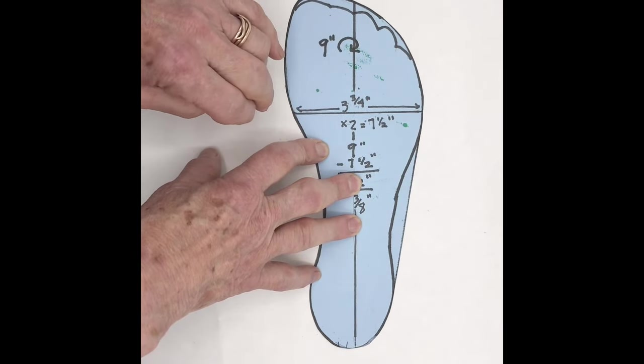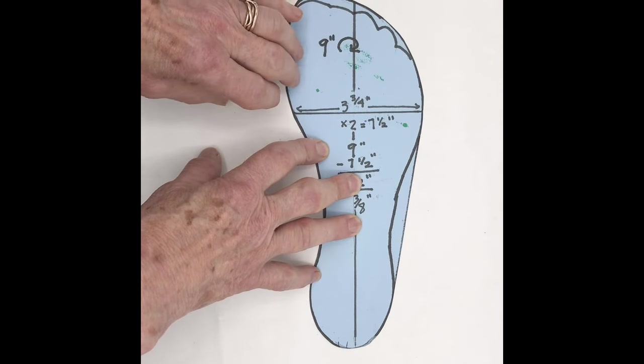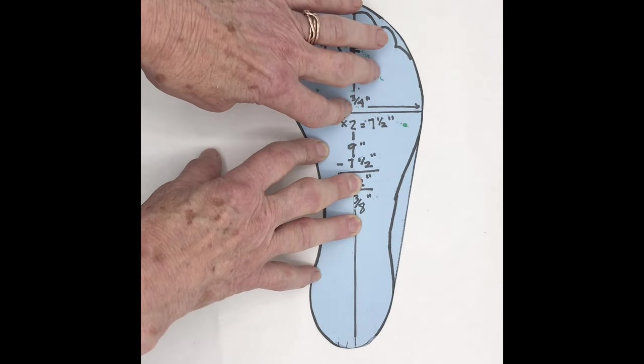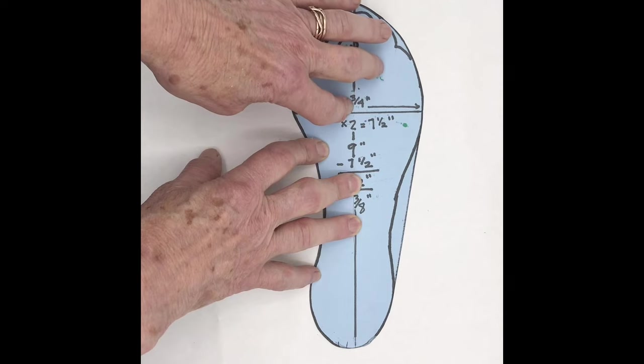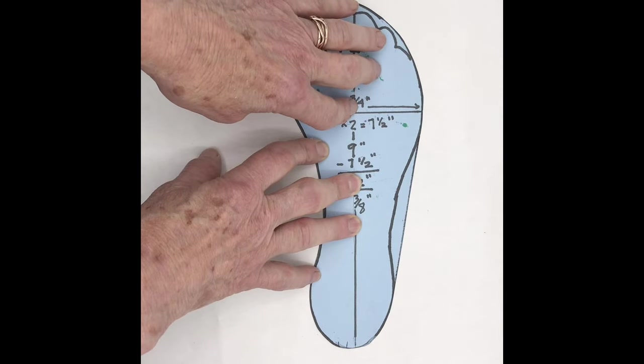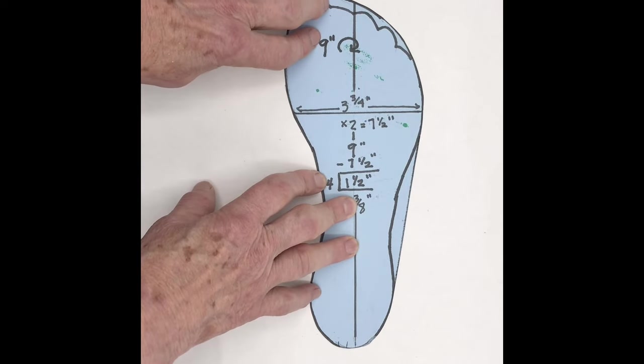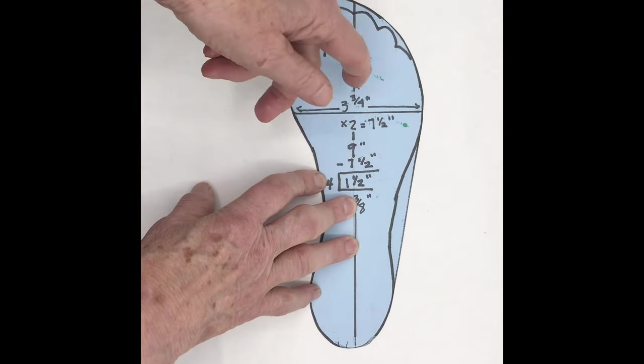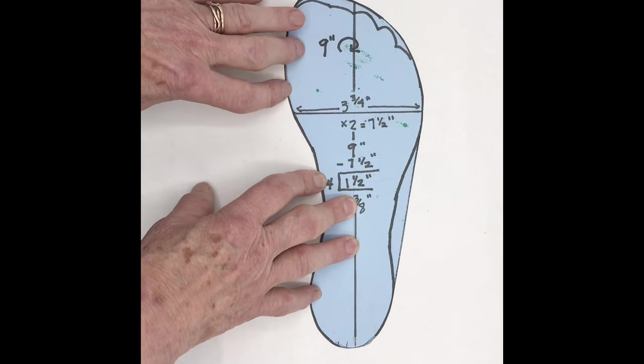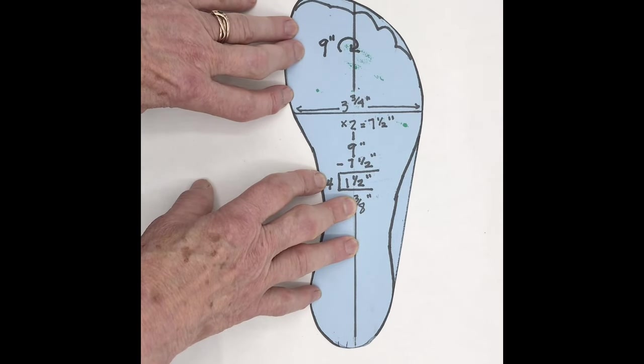You could also, if you don't have a tape measure, just use a string, go around your foot and mark where the string two ends meet and then lay that against a ruler. And that will give you that number of how much space you have to have around the ball area for the shoe to fit.